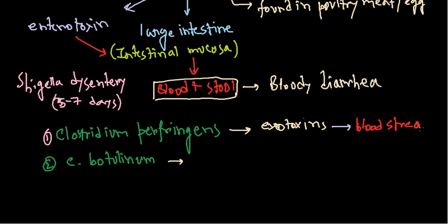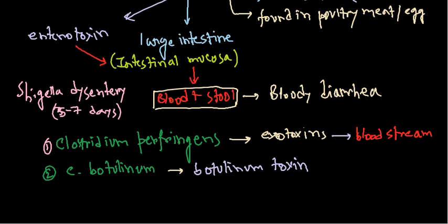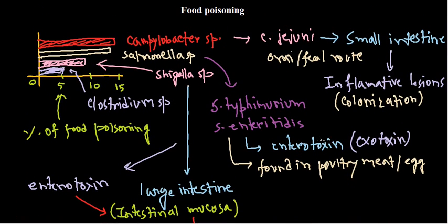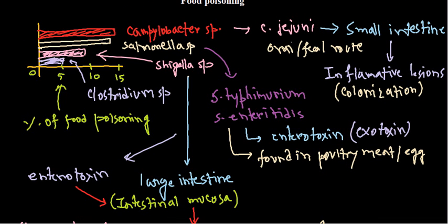Clostridium botulinum produces the most potent toxin known to humans — the botulinum toxin. This toxin results in flaccid paralysis. This type of Clostridium food poisoning is rare, but if it occurs it can be life-threatening. The other types of food poisoning are milder, but all ultimately result in diarrhea, abdominal cramps, severe pain, and headache.